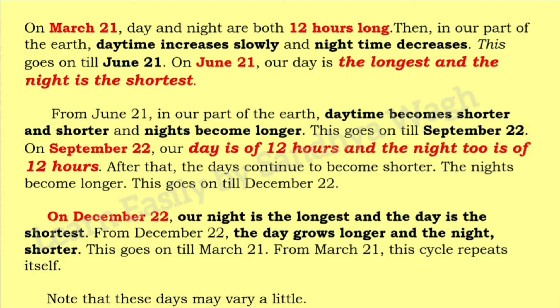Then, in our part of the earth, daytime increases slowly and night time decreases. This goes on till June 21. On June 21, our day is the longest and the night is the shortest. From June 21, in our part of the earth, daytime becomes shorter and shorter and nights become longer. This goes on till September 22. On September 22, our day is 12 hours and the night too is 12 hours. After that, the days continue to become shorter and the nights become longer.